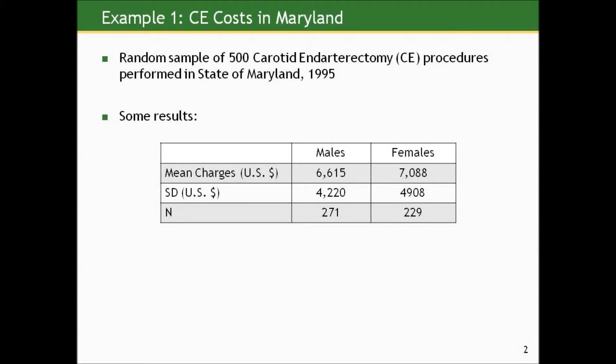This is an interesting one. This is a random sample of 500 carotid endarterectomy — from now on I'm going to call it CE — procedures performed in the state of Maryland from 1995. I took a random draw from a database that actually had the costs for all such procedures performed in Maryland in 1995. This compares the mean charges for this procedure for males versus females in the sample.